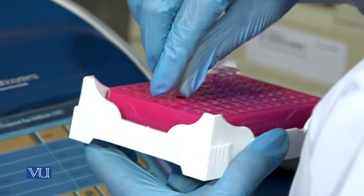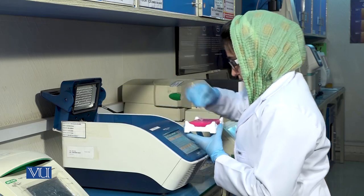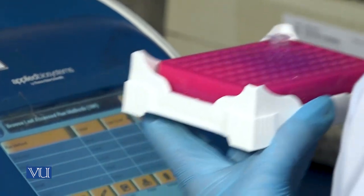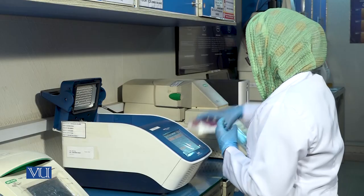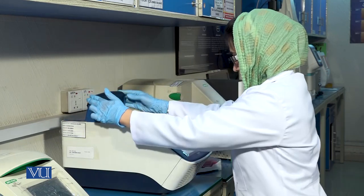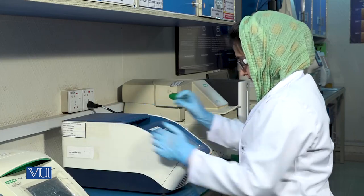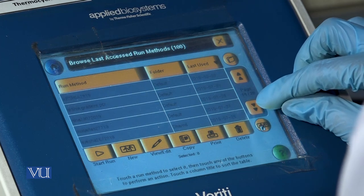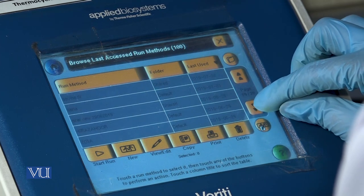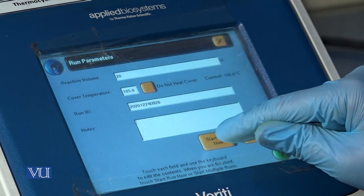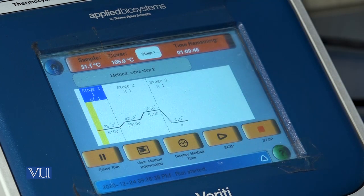Place the PCR tubes into the thermal cycler. Set the PCR conditions as shown on the thermal cycler screen. Start the reaction and wait till the whole process is completed.